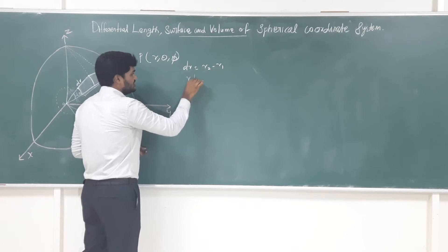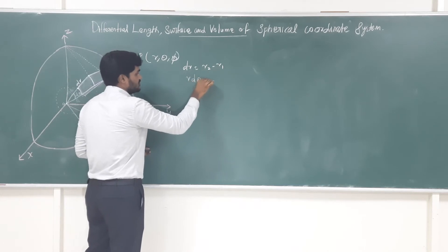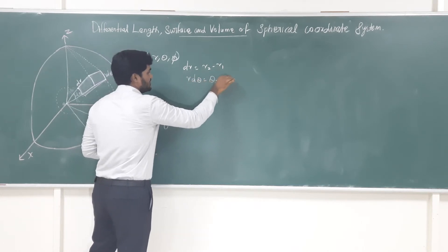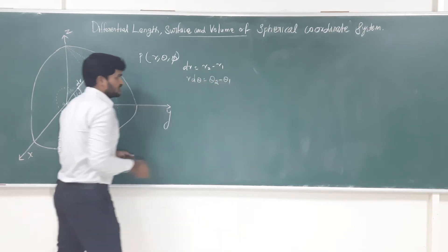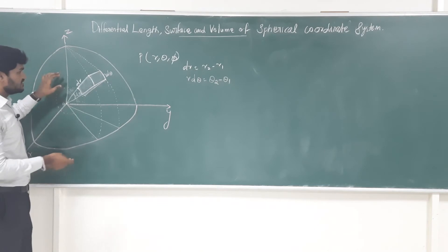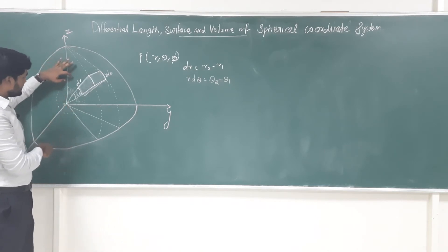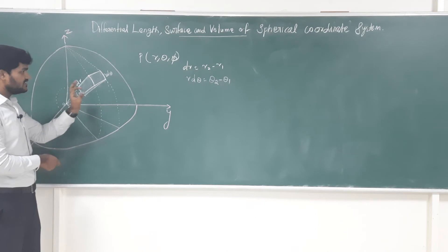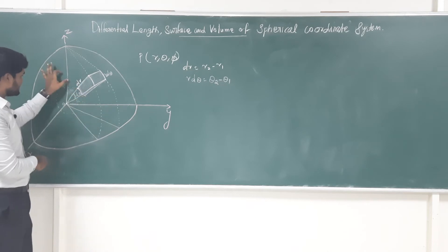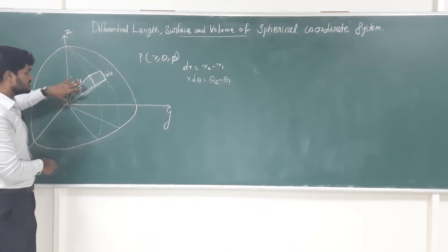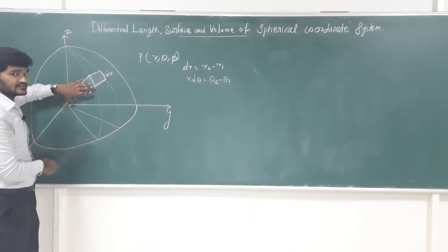So r·dθ = θ2 − θ1, where θ1 is the angle between the z-axis and radius r1, and θ2 is the angle between the z-axis and the bigger radius r2.